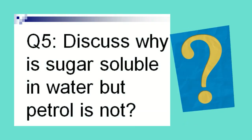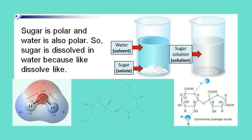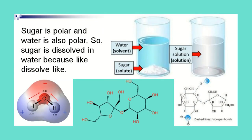Discuss why is sugar soluble in water but petrol is not. Sugar is polar and water is also polar, meaning both have the same bonding—that is, polar covalent bonding. So, sugar is dissolved in water because like dissolves like. Another point is that both have OH groups.